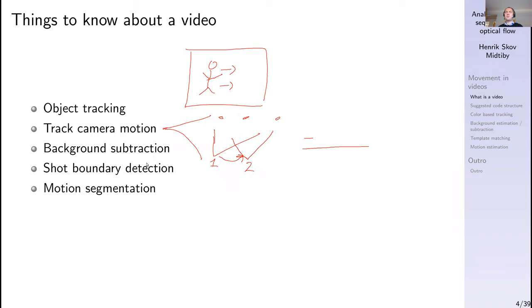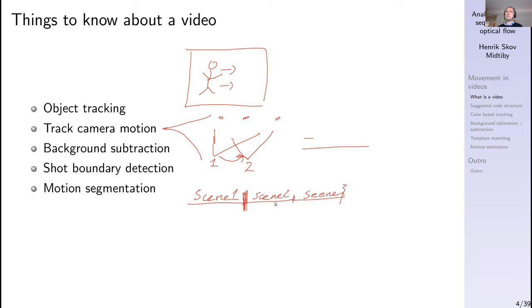Another task is background subtraction: if we have a steady camera looking at the same scene over time, we can estimate the background and detect what is moving versus standing still. We can also detect shot boundaries — in a video composed of multiple segments, shot boundary detection identifies where the video transitions from one scene to the next, because at those instances a lot changes in the intensity image from t to t plus one.